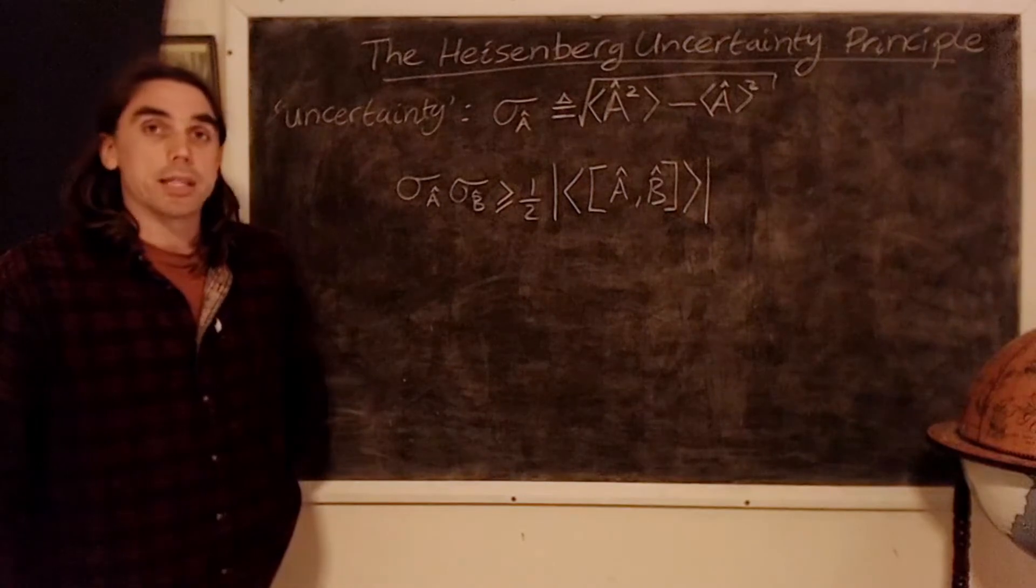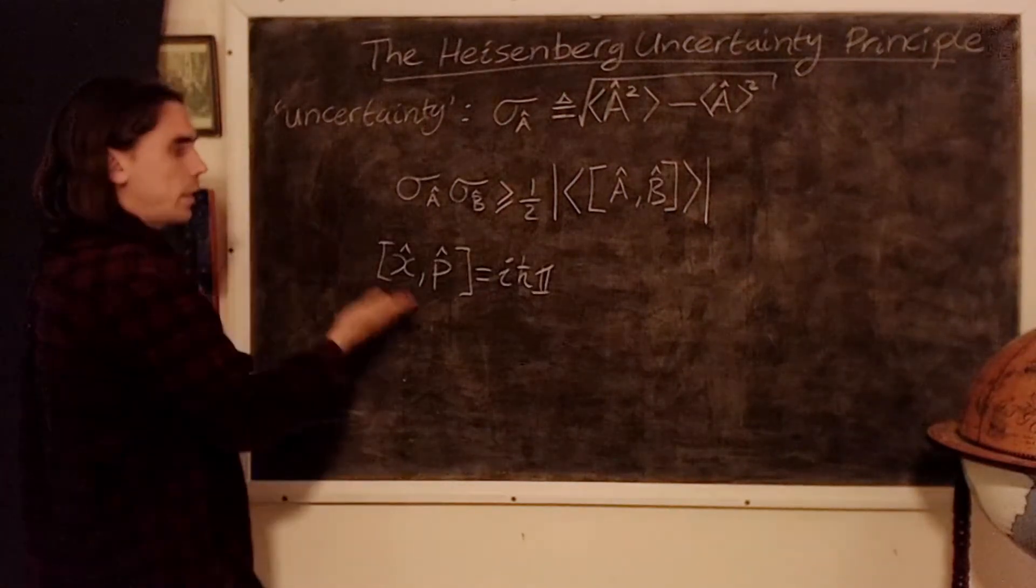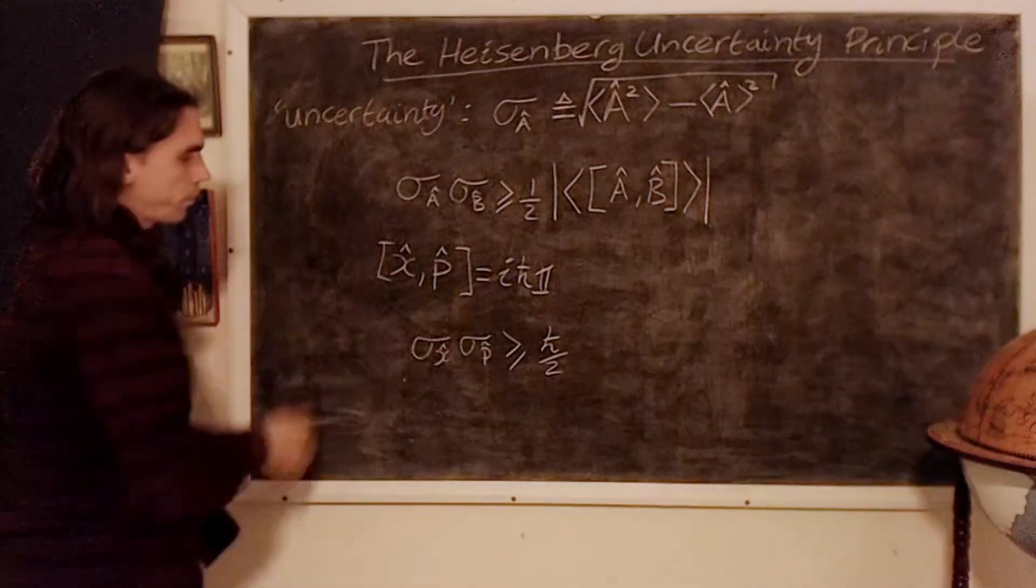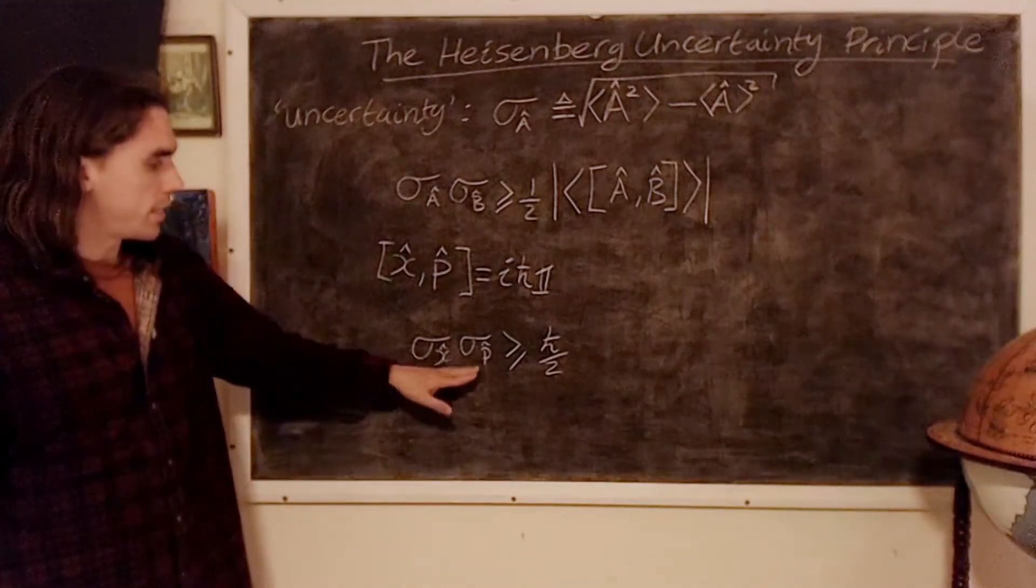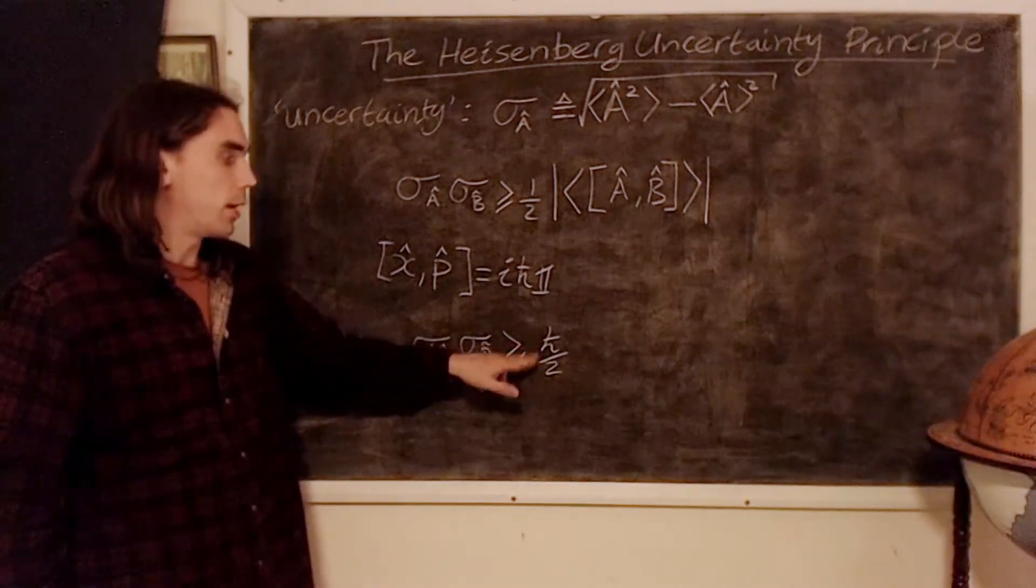So in particular we could take the case of the canonical commutation relations, substitute it in, and we find that the product of the uncertainties of position and momentum must be greater than or equal to h bar over two.